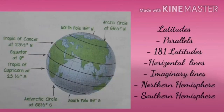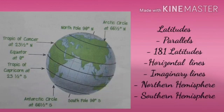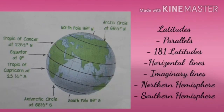The equator divides the earth into two equal halves — one is the northern hemisphere and another one is the southern hemisphere. Many other imaginary horizontal lines drawn parallel to the equator are called latitudes or parallels. There are a total of 181 lines of latitude on the globe. The equator is zero degrees. The north pole is 90 degrees to the north of the equator and the south pole is 90 degrees to the south of the equator.